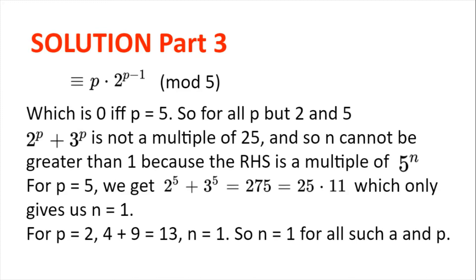We can see that p multiplied by 2 to the power of p minus 1 is congruent to 0 mod 5 if and only if p equals 5. So for all p other than 2 and 5, 2 to the power of p plus 3 to the power of p is not a multiple of 25, because the quotient divided by 5 is not a multiple of 5. Therefore n cannot be greater than 1, since we've shown the right-hand side would need to be a multiple of 25 for n greater than 1.